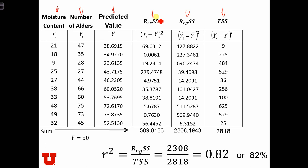The residual sum of squares is just yi minus y hat squared. So it's 47 minus 38.69 all squared. The regression sum of squares is y hat minus y bar squared, so it's 38 minus 50 squared, which gives us 127.